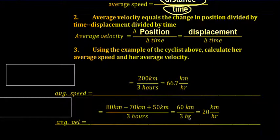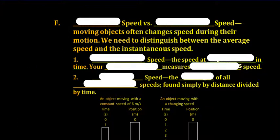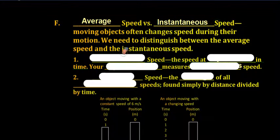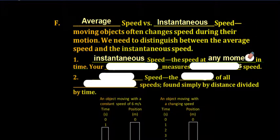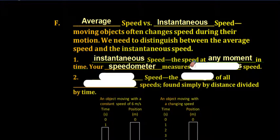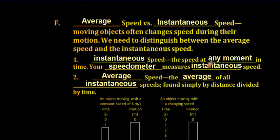We also need to distinguish between average speed and instantaneous speed. Moving objects often change speed during their motion. Instantaneous speed is the speed at any given moment in time — your speedometer, for example, measures instantaneous speed. Average speed is the average of all instantaneous speeds, found simply by dividing distance by time.